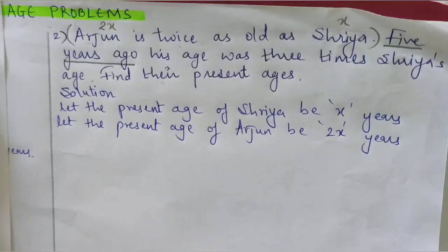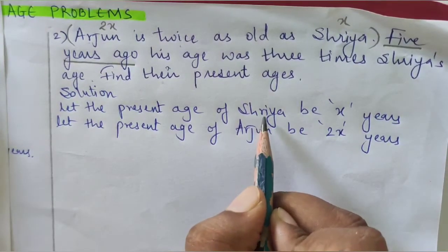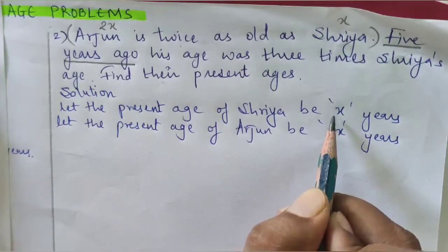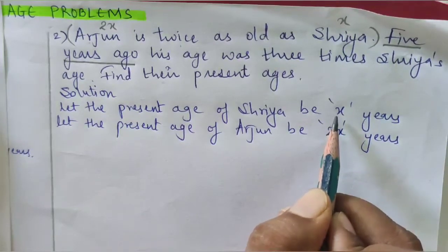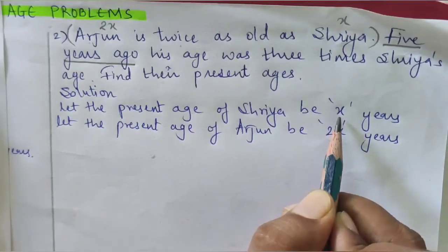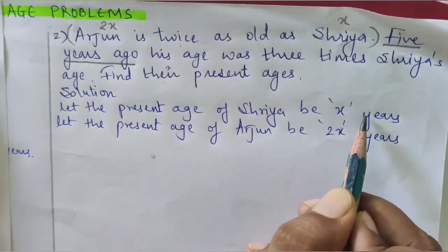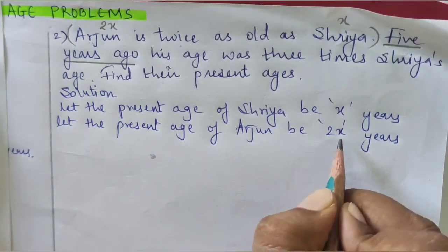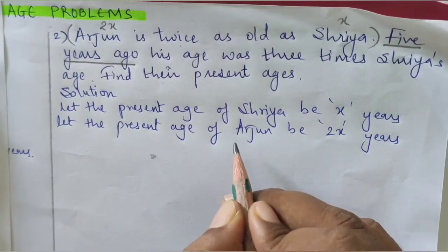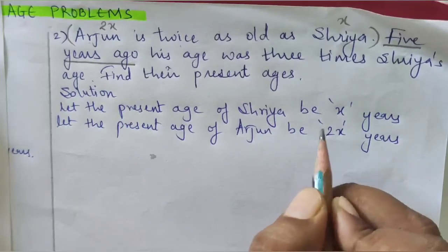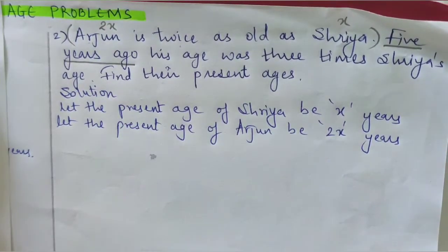Similarly, Shriya's present age is x, so 5 years ago her age was x − 5. Arjun's present age is 2x, so 5 years ago his age was 2x − 5. Let us write that statement now.